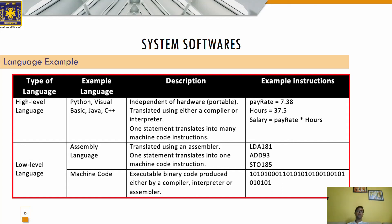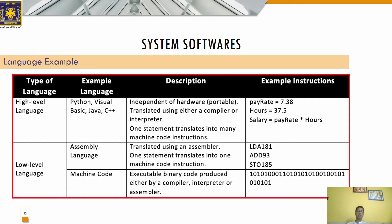In summary, in this session we have gone through the various types of system software such as utility software, device drivers, language processors, and BIOS, along with their advantages, disadvantages, and examples. Go through all the contents and if you find any difficulties, contact me at my email. Thanks for your patience and have a good day.